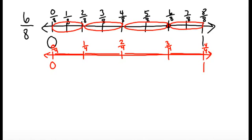And now if I go from my point at 6 eighths all the way down, I land at 3 fourths. So 6 eighths and 3 fourths are equivalent fractions because they end up at the same point on the number line.